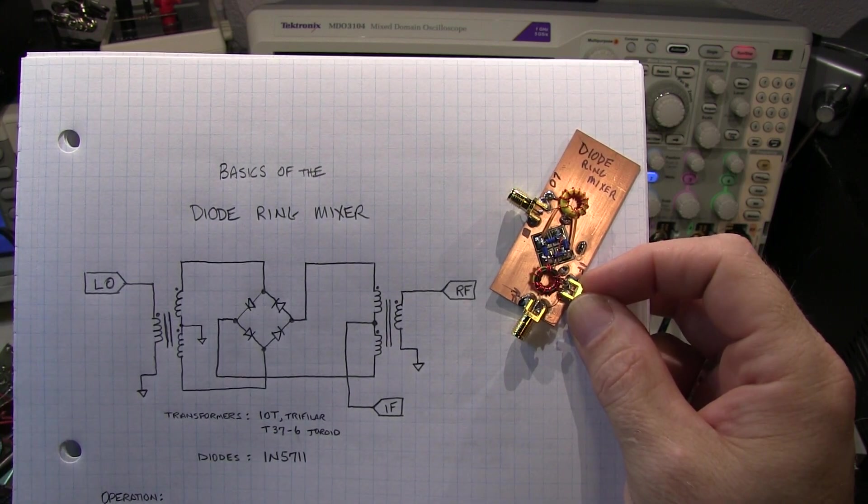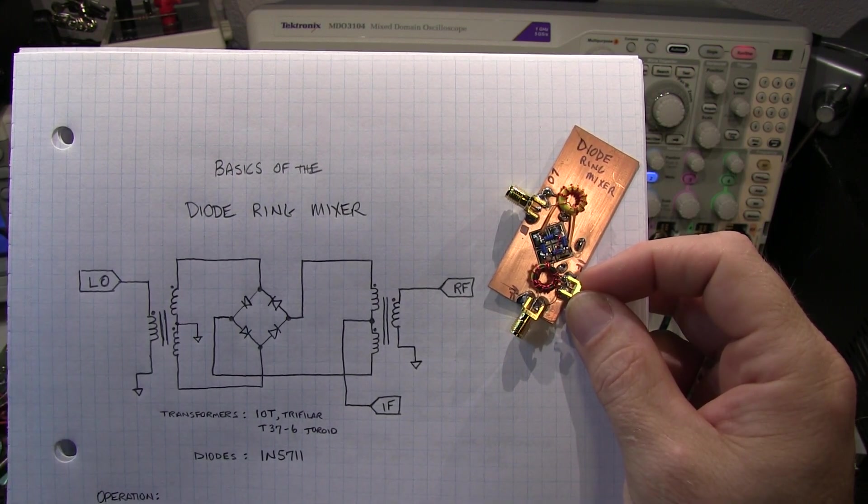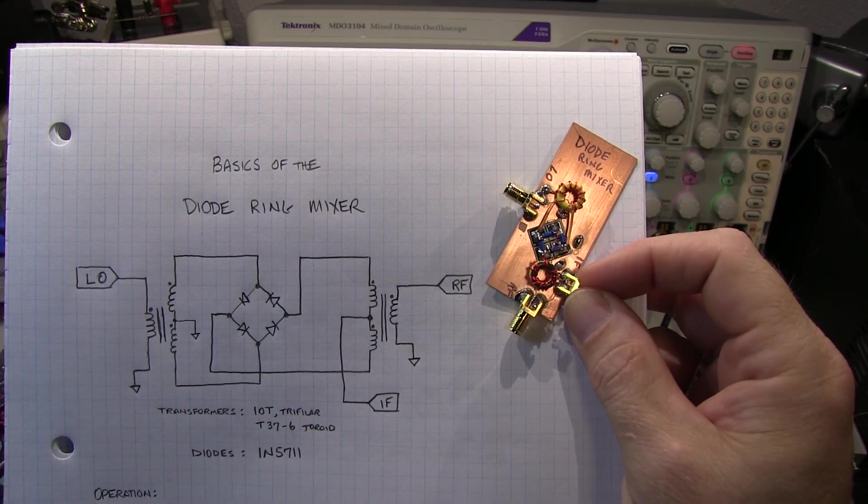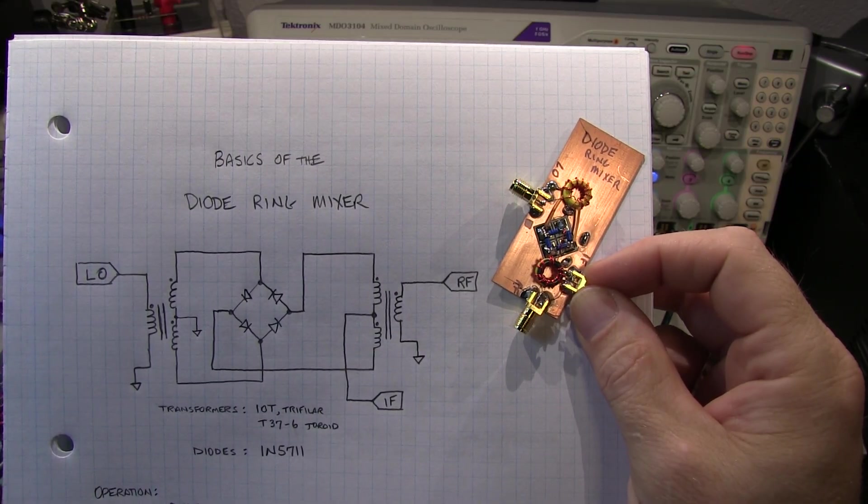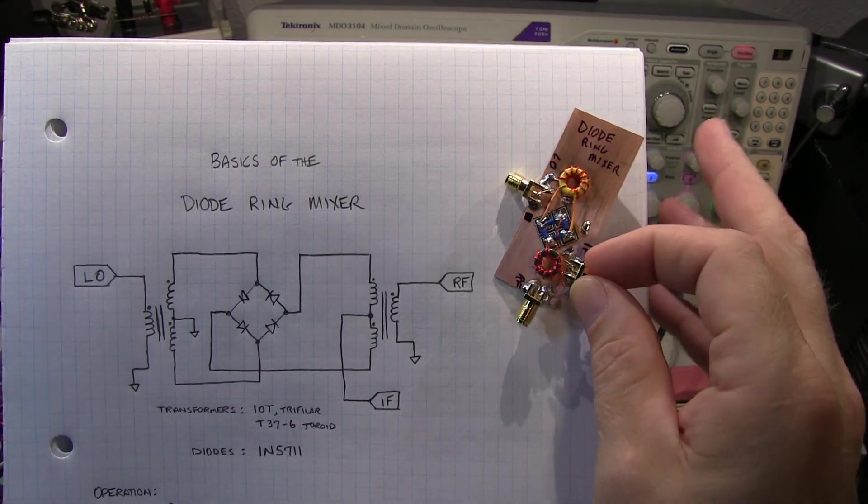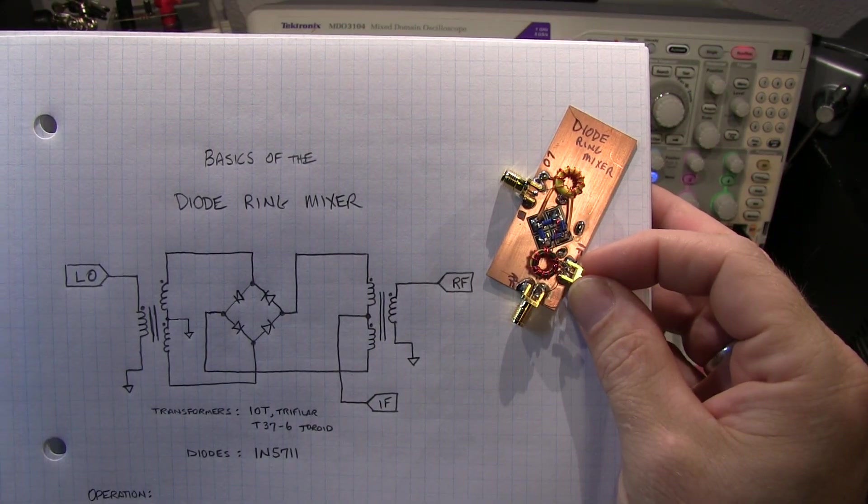This video is going to talk about how the classic diode ring double balance mixer operates. The schematic for the diode ring mixer is shown here and here's the circuit that we've built up that we'll go ahead and test.